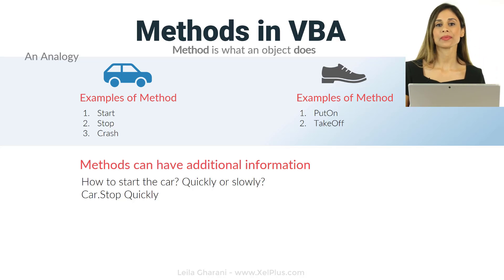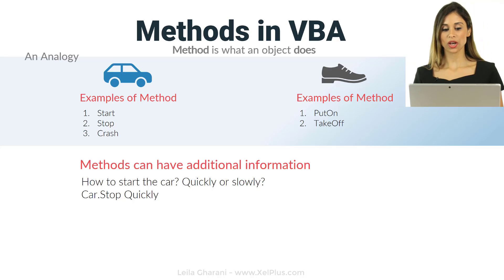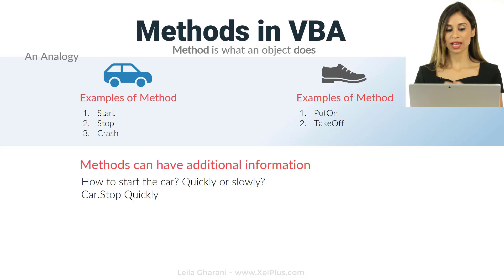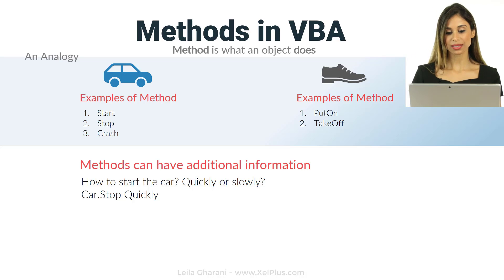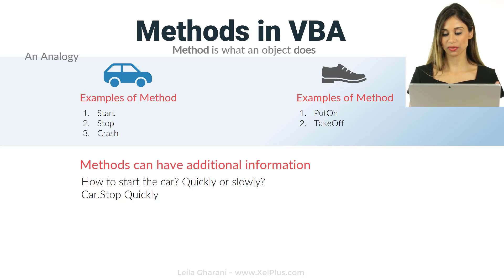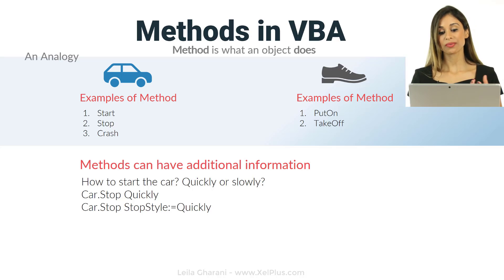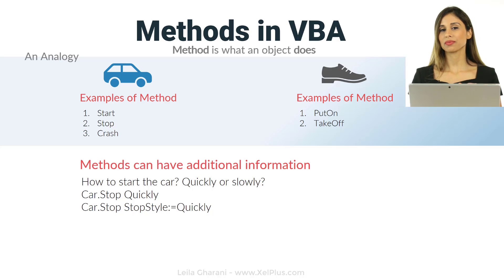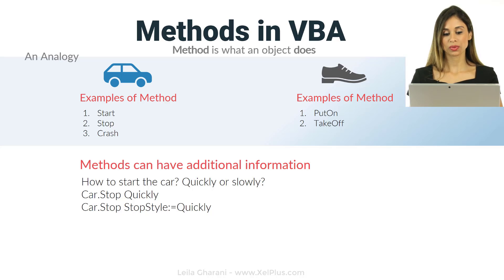The way you write it in VBA is object.method and then the argument. The argument is not separated with a dot. There are different ways of writing this: you can put a space and separate arguments with a comma just like in the formula bar, or you can write it with the argument name followed by a colon and equals sign — for example, stop_style:= value.